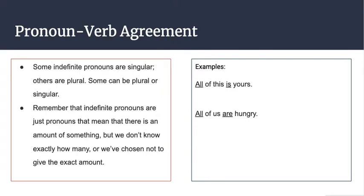The next example is: all of us are hungry. In this case, we're going to use the word are because we're going to look at the pronoun us right before it and that tells us that probably means more than one person. We wouldn't say all of us is hungry; we would say all of us are hungry.